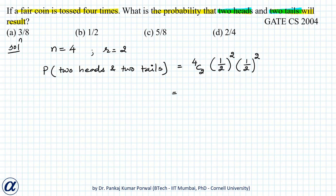Simplifying: 4C2 equals 4 times 3 divided by 1 times 2, which is 6, multiplied by one-quarter times one-quarter. The 4 cancels, giving us 3 divided by 8. So the answer is 3/8 and our option is correct.